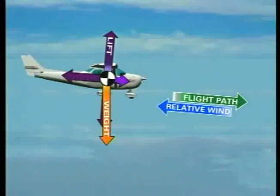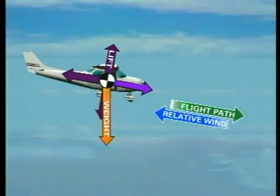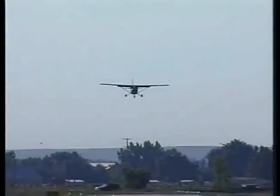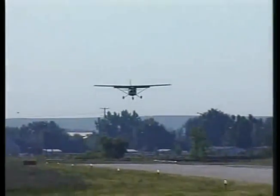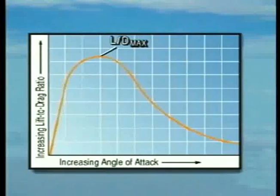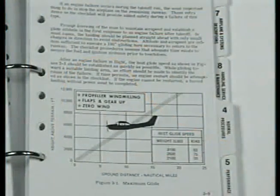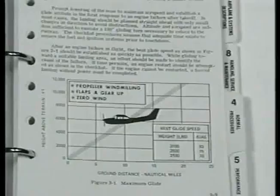If the force of thrust is removed by reducing the power to idle, the forward component of weight must be increased to counteract the force of drag; in order to maintain the same airspeed, the nose must be lowered even further. In a gliding descent, the best glide angle and the best glide distance result from flying the airplane at an angle of attack which provides the least amount of total drag for the corresponding lift. This angle of attack is referred to as the maximum lift-to-drag ratio, or LD max. The aircraft's best glide speed normally is achieved at the angle of attack corresponding to LD max and is published in the pilot's operating handbook.